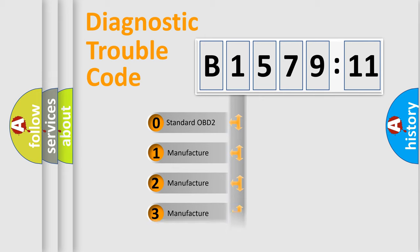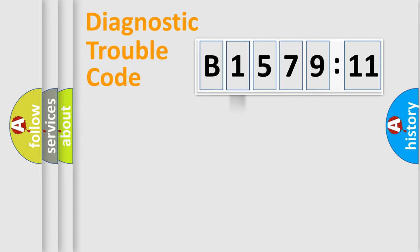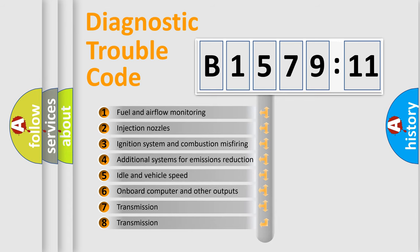If the second character is expressed as zero, it is a standardized error. In the case of numbers 1, 2, 3, it is a manufacturer-specific error expression.